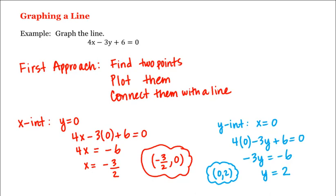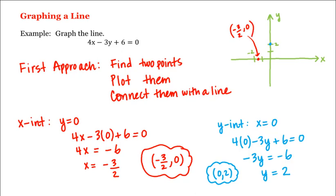So let's plot these points. This is the y-axis and this is the x-axis. Our x intercept is at negative 3 halves — that is the first point (negative 3 halves, 0). And our y intercept is 2, so this is our second point (0, 2). Connecting these points with a straight line gives us the line we're looking for.